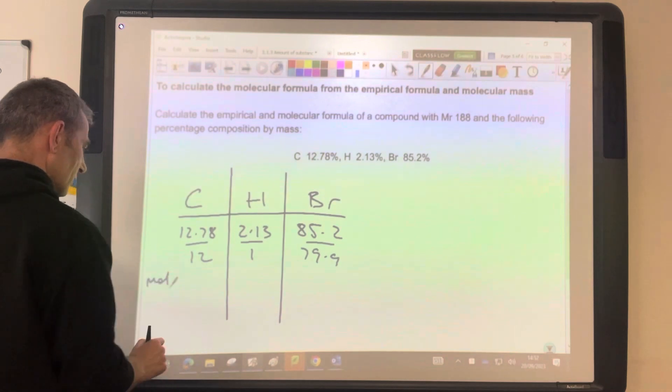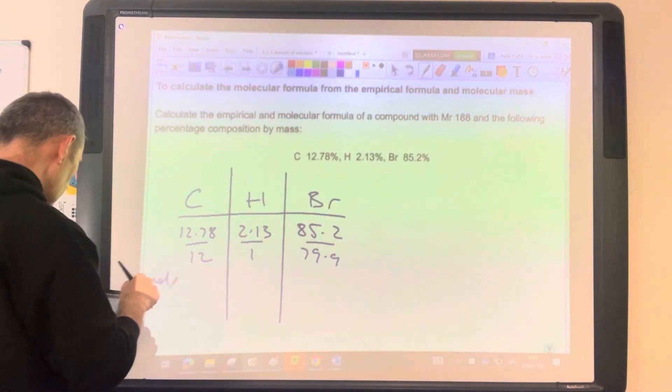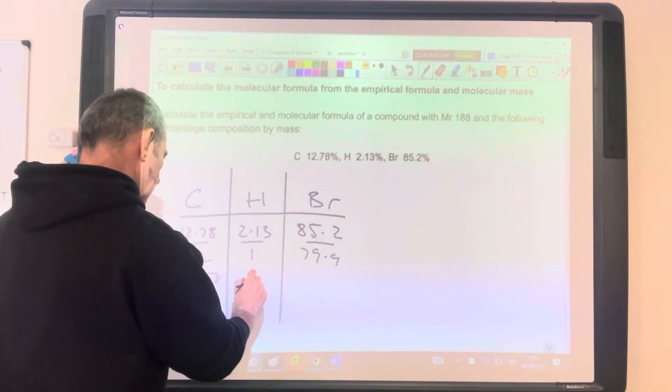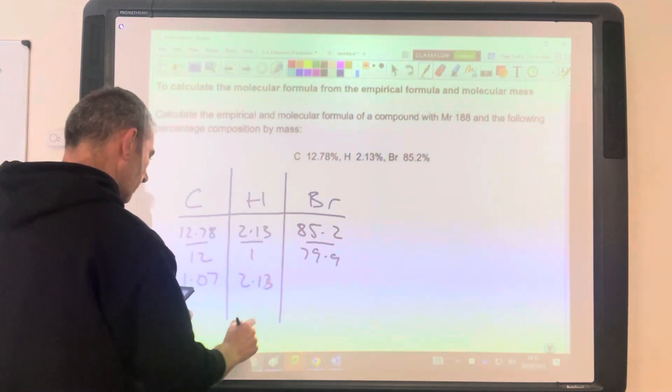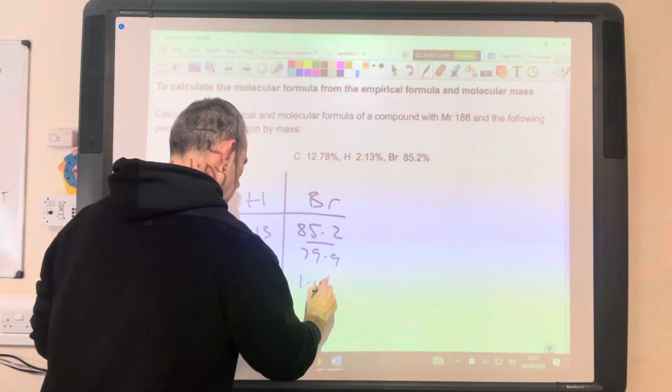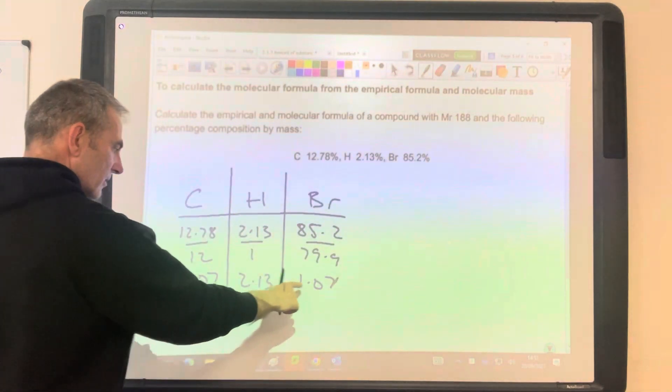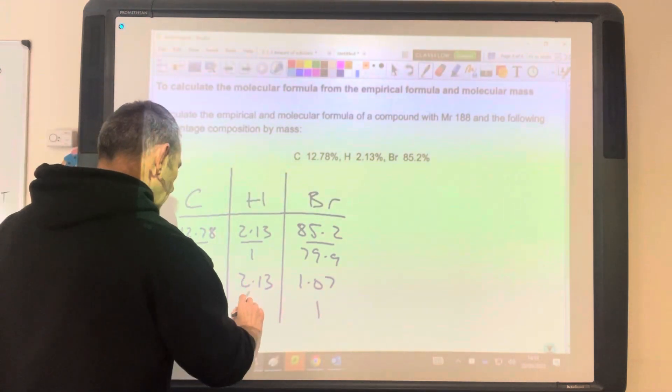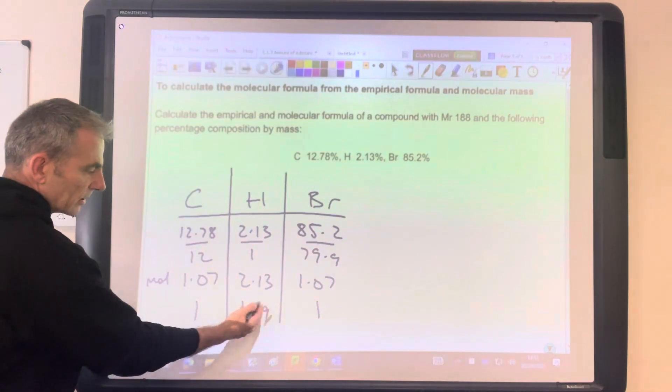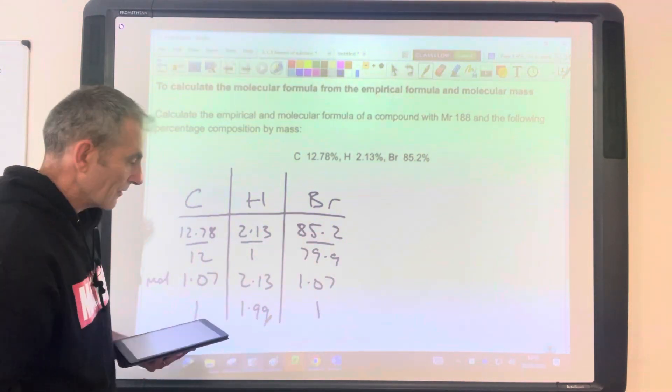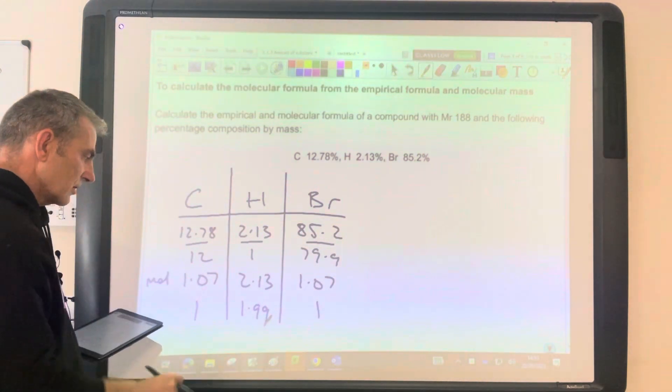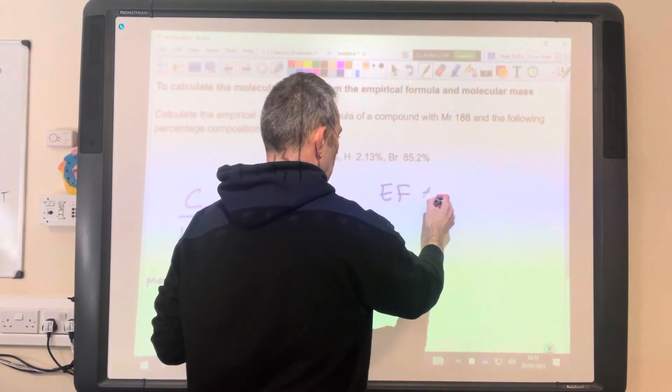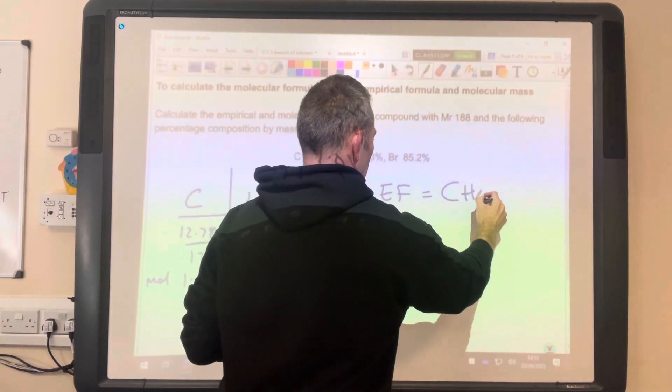I'll write moles here, so that's significant. So in three significant figures, 1.07 moles of carbon, 2.13 obviously moles of hydrogen, 1.07 moles of bromine. Divide by the smallest, so they're both going to be 1. And that comes out of 1.99. So hopefully you'll appreciate that is virtually 2. So we're going to say that's 2. So the empirical formula, let's put EF for short, is CH2Br.